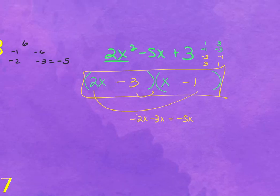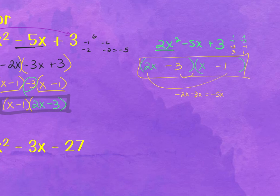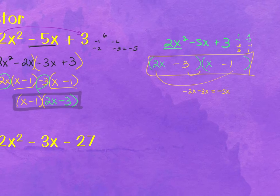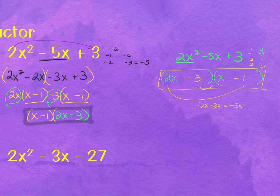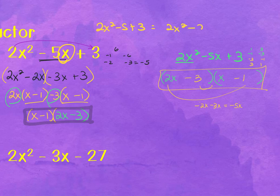Student question: what if it was just 5 instead of 5x? The middle term will always have an x — that's what makes it a trinomial. Without the x, you'd be combining like terms and it would become a binomial. For example, 2x² − 5 + 3 simplifies to 2x² − 2, which is no longer a trinomial.